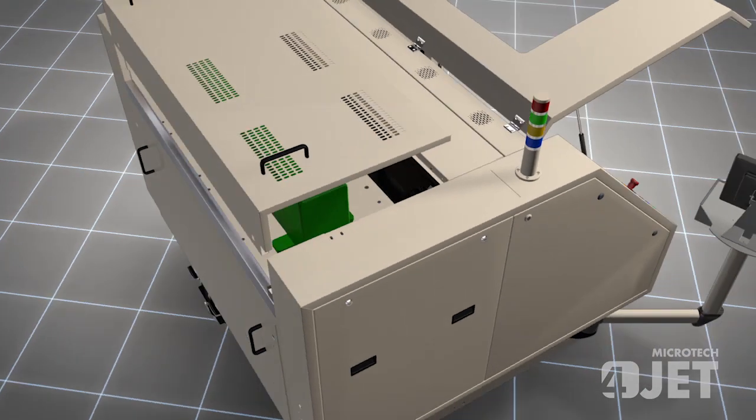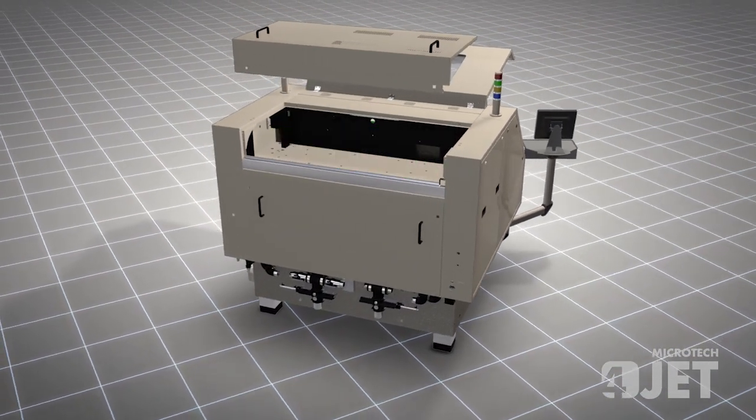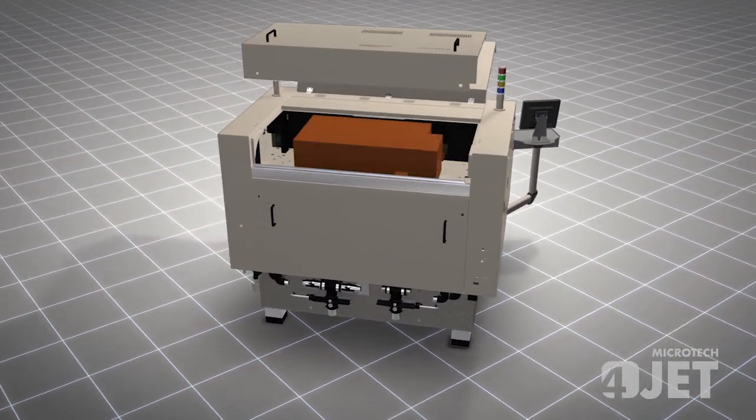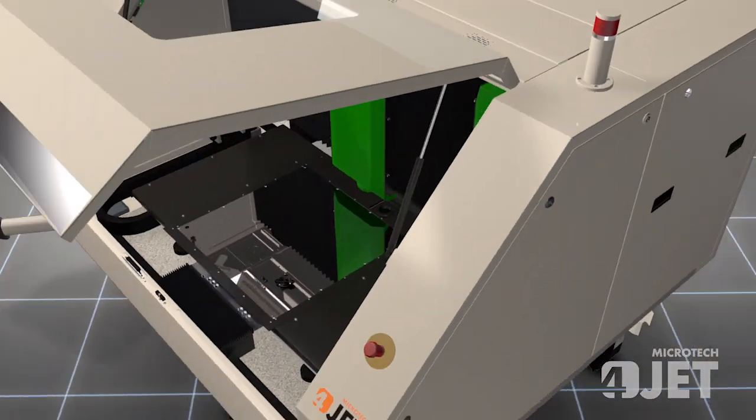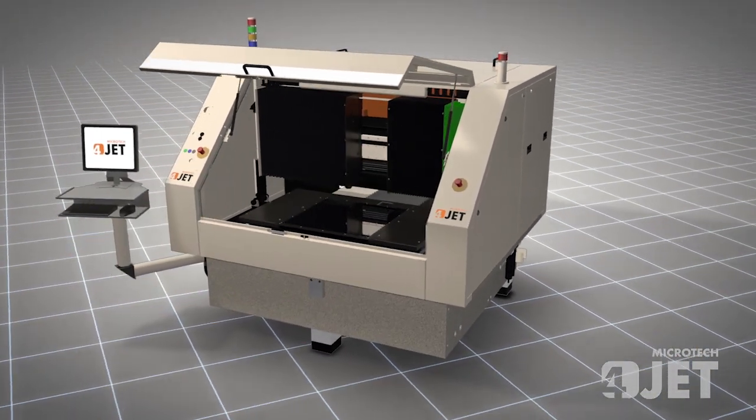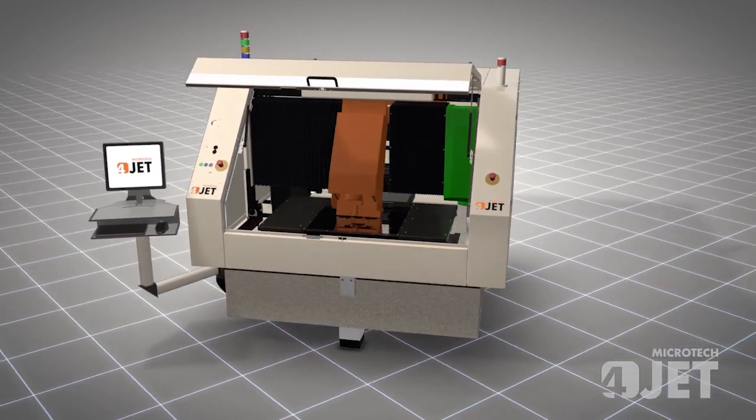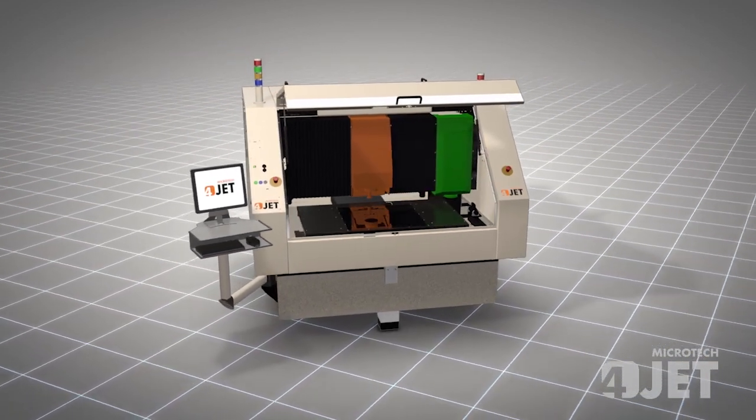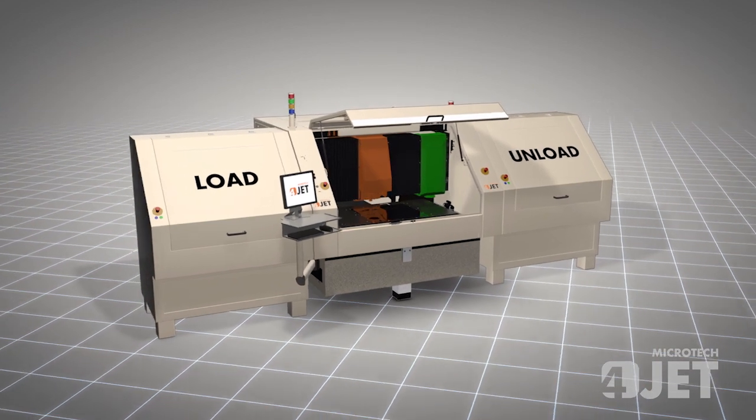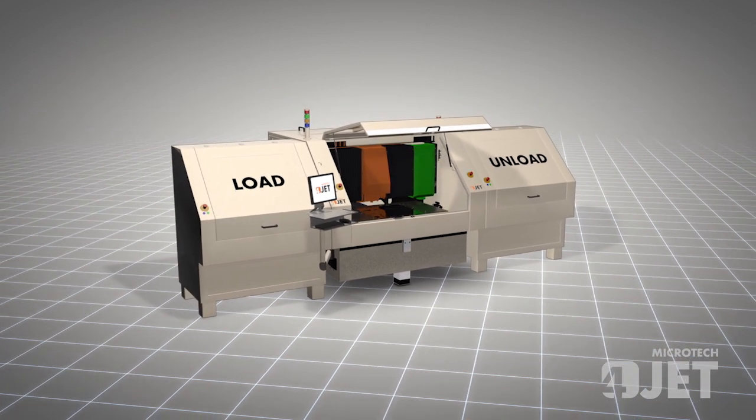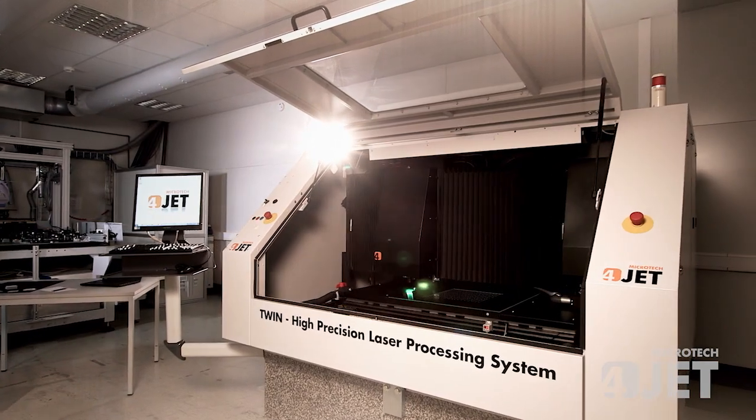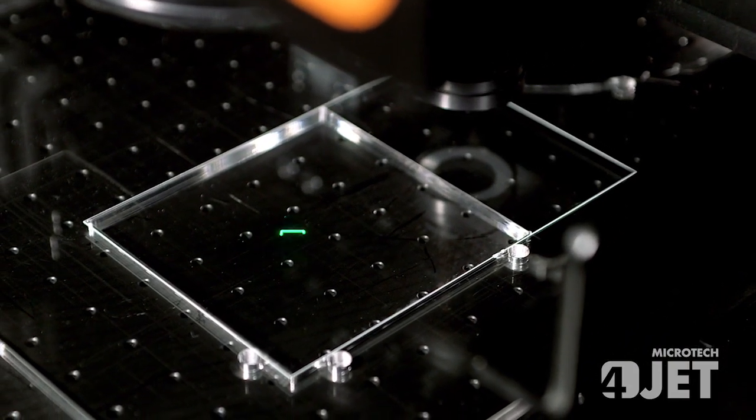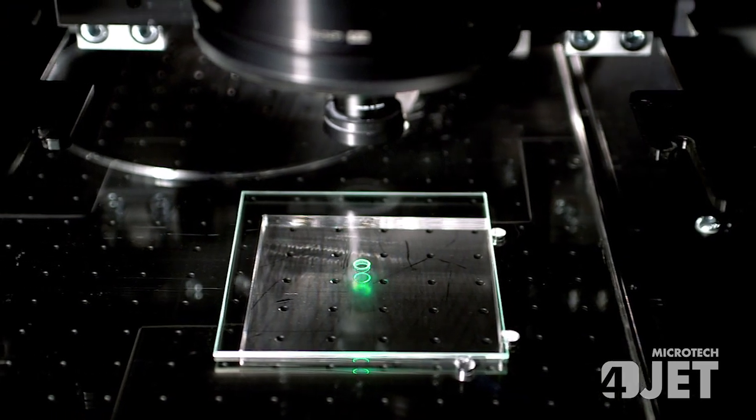The modular design allows incorporating different laser sources and processing units depending on customer applications. Loading and unloading is achieved either manually or fully automated by tailored additional modules. Our Twin system enables ablation of thin layers, hole drilling, and glass cutting.